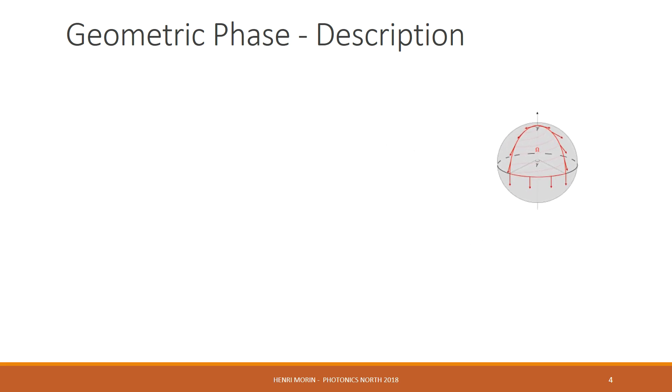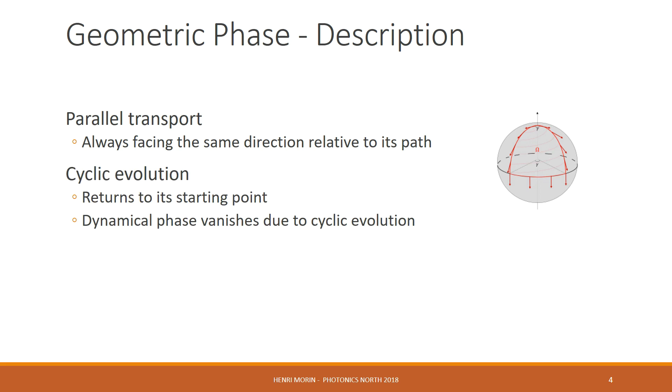Now, this relied on two key things, the first being parallel transport. This just means that you were always facing the same direction relative to your path. As you can see on the schematic, the arrow is always locally pointing the same direction. The other point is cyclic evolution. This just means that you return to your starting point, but it also implies that the dynamical phase vanishes due to cyclic evolution.